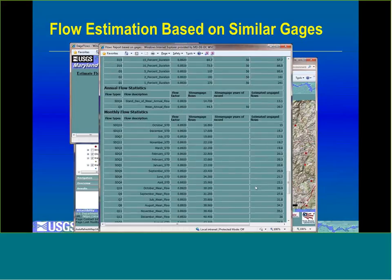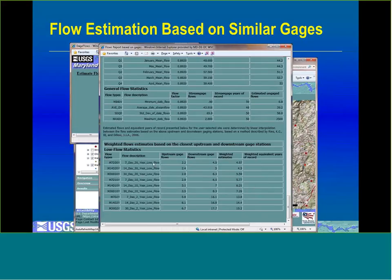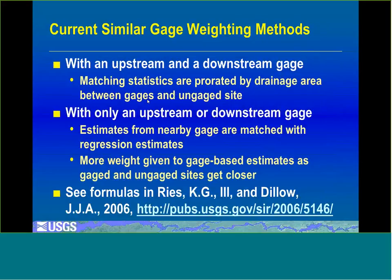When you have both upstream and downstream gauges, the tool provides weighted estimates interpolated based on the drainage area for your selected site and the drainage areas for those gauges. When you have only an upstream or downstream site, it matches flow estimates from the gauge with estimates from regression equations, using a weighting process that gives more weight to the gauge-based estimates the closer the gauging station is to your ungauged site.